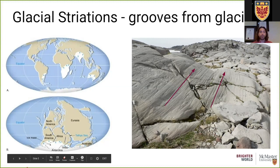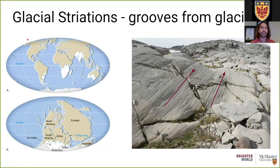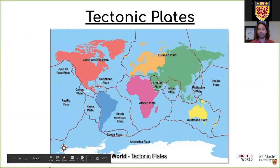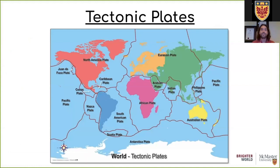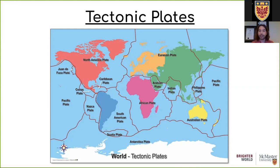So if the continents were in that position before, why aren't they there anymore? That leads us into tectonic plates. Currently, the Earth has 15 tectonic plates, and these plates are always moving. For example, the Arabian plate is currently moving northeast and being pushed underneath the Eurasian plate. The Indian plate is still colliding with Eurasia, which is causing the Himalayas to grow — by about six centimeters every year, which becomes significant over hundreds or thousands of years.